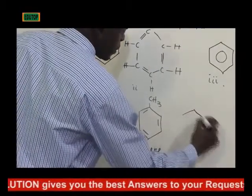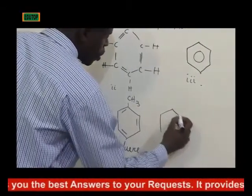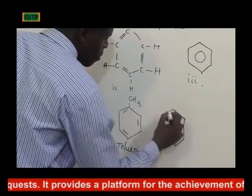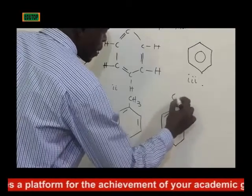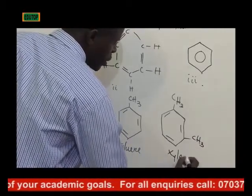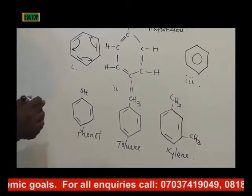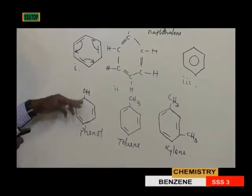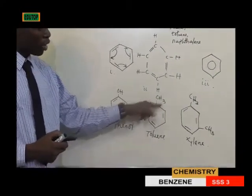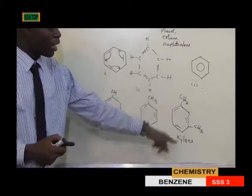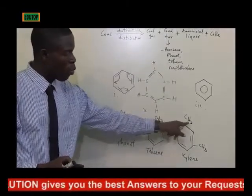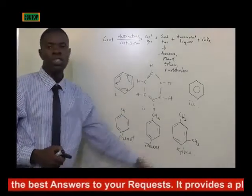Xylene is also a benzene ring, but this time around it has the attachment of dimethyl — it has two methyl groups. One CH3 is here and the other CH3 is here, and this is xylene. So these are the compounds of benzene: phenol (attachment of OH), toluene (attachment of CH3), and xylene (attachment of two methyl groups, one at position 1 and the other at position 3).